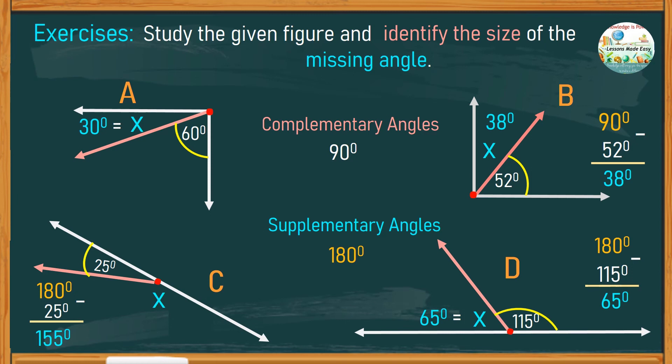One way to avoid mixing up these angles is to take note that C comes before S in the alphabet, and that 90 comes before 180.